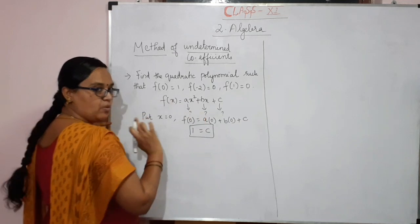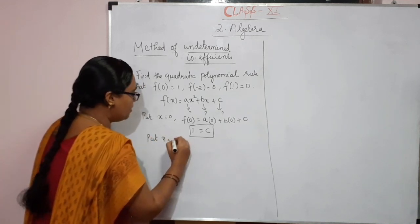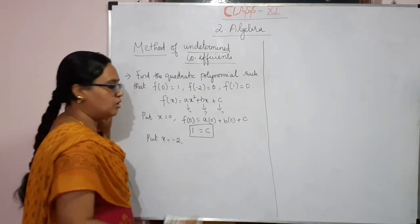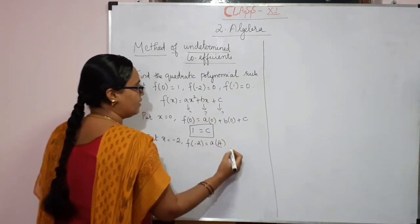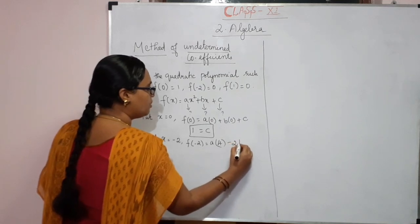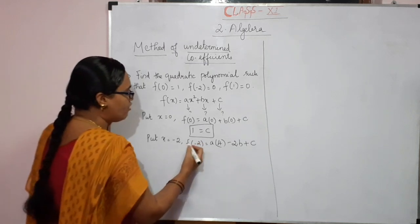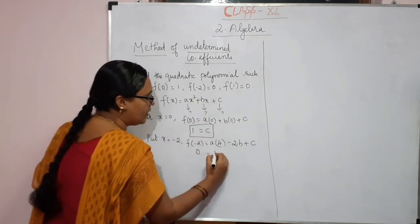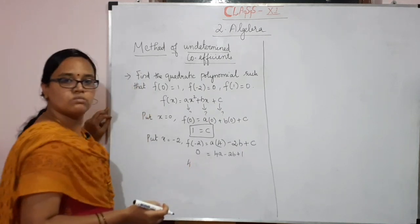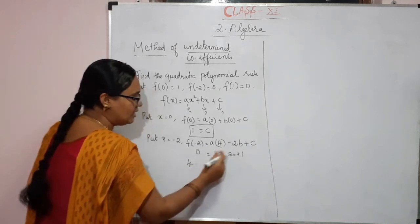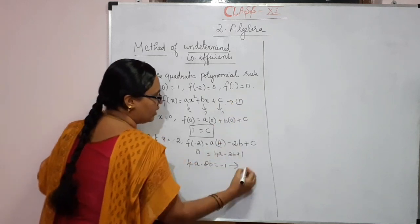Next, apply the condition f(−2) = 0. Put x = −2: f(−2) = a(4) + b(−2) + c = 0, so 4a − 2b + 1 = 0, which gives 4a − 2b = −1. This is equation number 2.